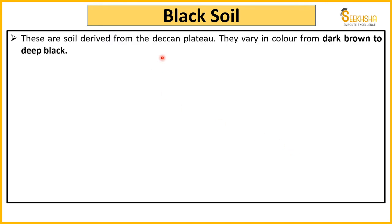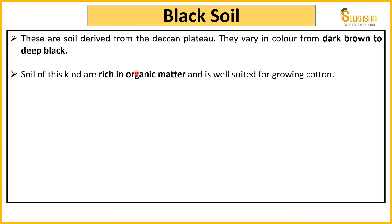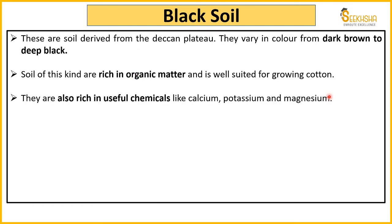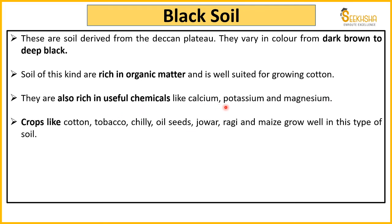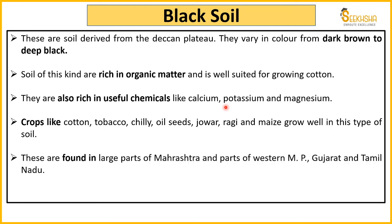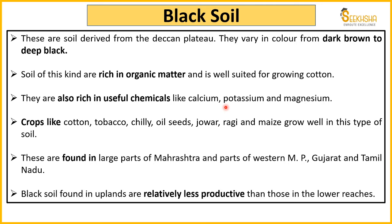Next is black soil. Black soils are mainly found in Deccan India. They range from dark brown to deep black, are rich in organic matter, and are famous for cotton growing — they are called black cotton soil. They are rich in calcium, potassium, and magnesium. Major crops grown include cotton, tobacco, chili, oilseeds, jowar, ragi, and maize. Black soils are found in Maharashtra, Western MP, Gujarat, and Tamil Nadu. Upland black soil is comparatively less productive than black soil found in lower valley areas.